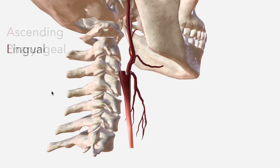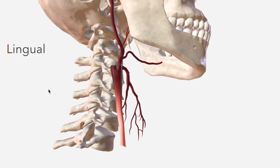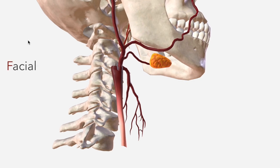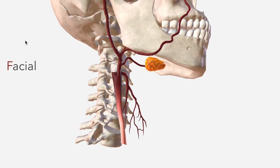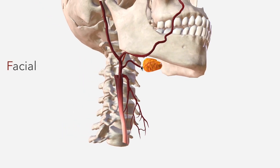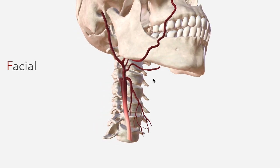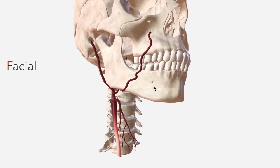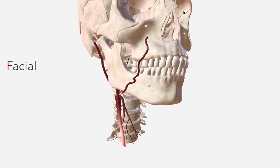We next have the lingual artery, which true to its name supplies the floor of the mouth and the tongue. We then have F for the facial artery, which courses anteriorly deep to the submandibular gland, just here, before ascending across the inferior border of the mandible to make this really tortuous course across the face toward the nasolabial fold.